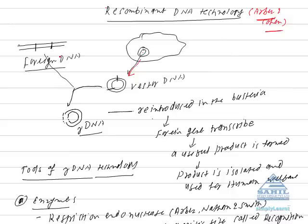A gene of our interest called foreign DNA is taken out from the cell. Another DNA called vector DNA is taken out from another cell, for example from E. coli. Now we have two DNAs. One DNA is isolated from E. coli and the other DNA is from another cell.